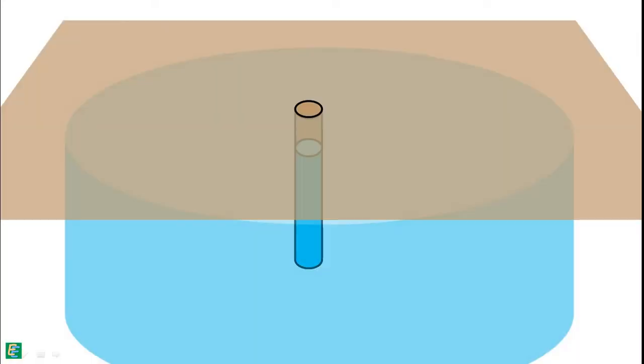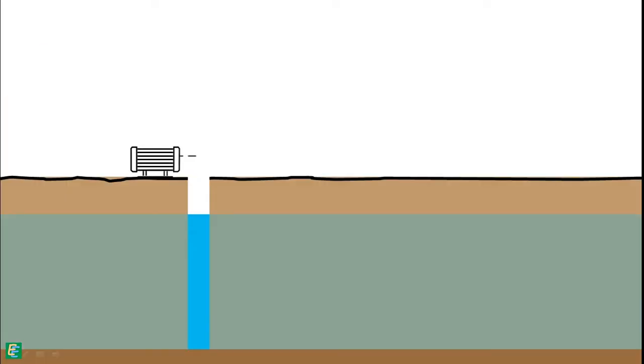If we imagine it in 3D, then we can see the flow is radially inward from all directions. Hence, when we pump out water from the well, the water in the aquifer moves towards the well and starts refilling it.